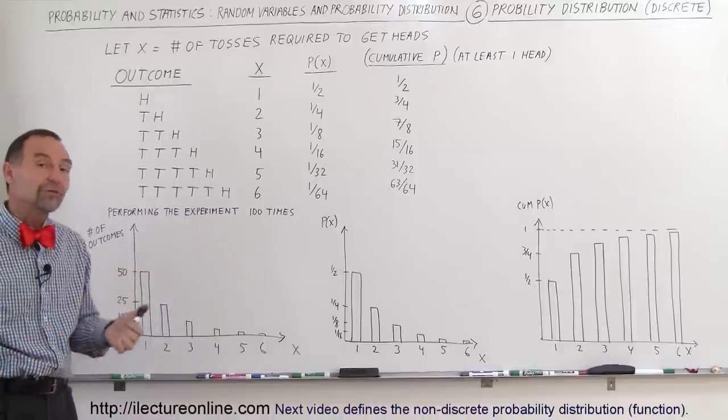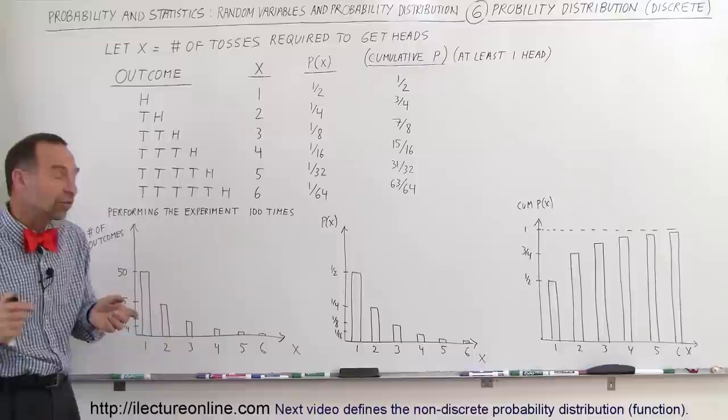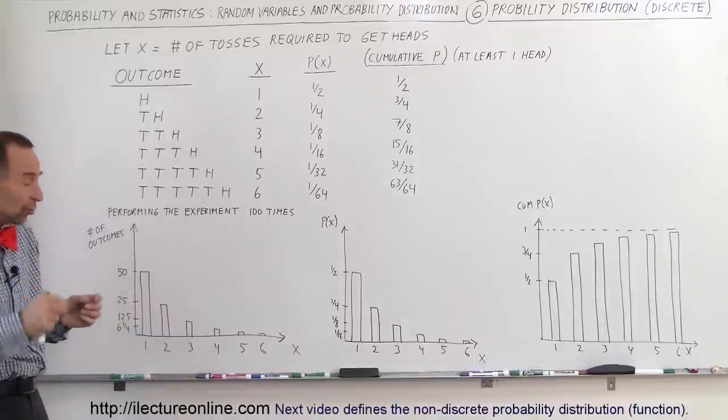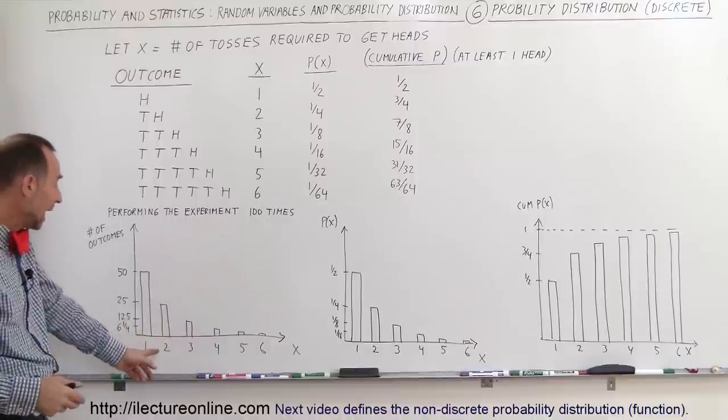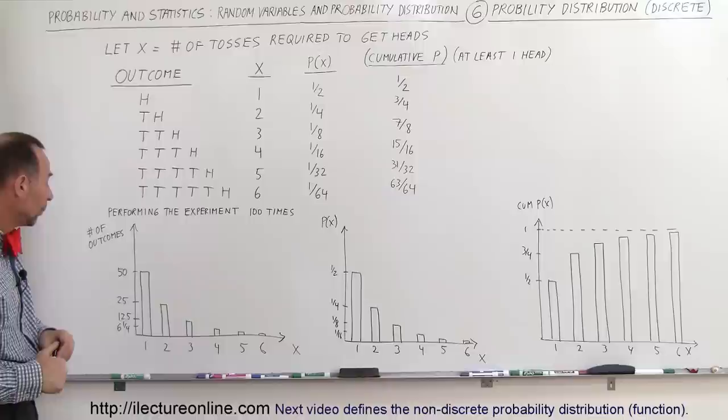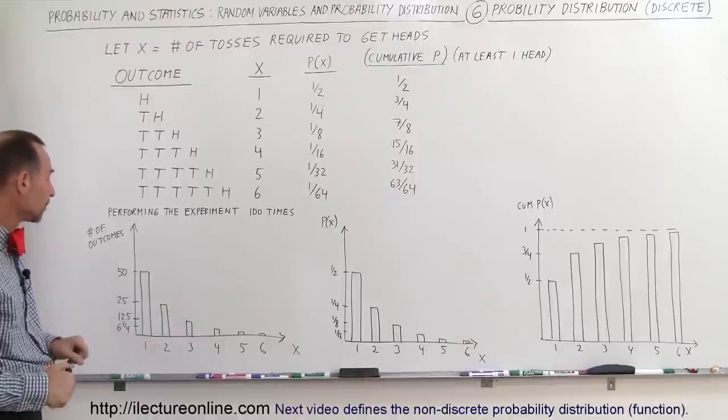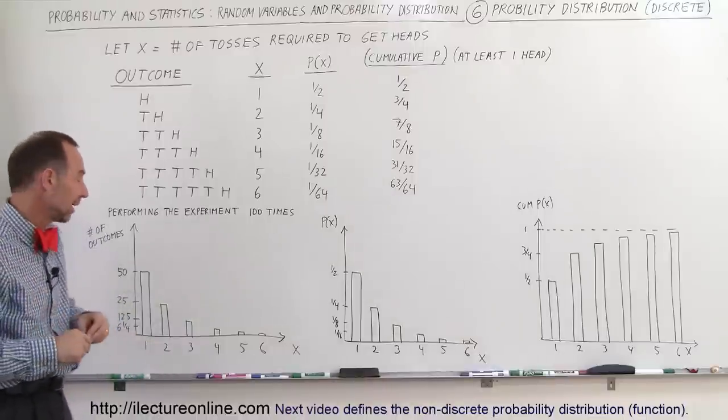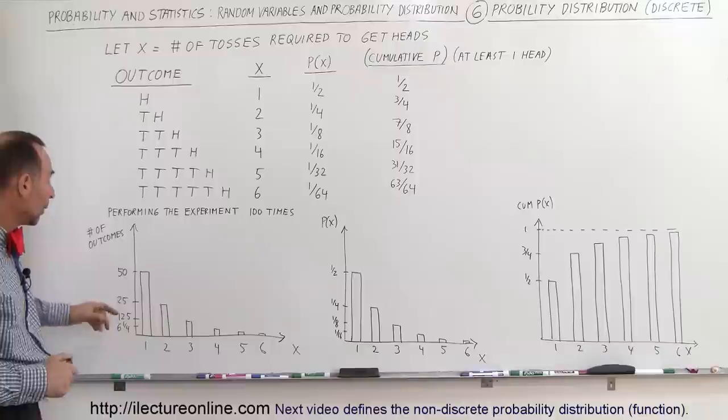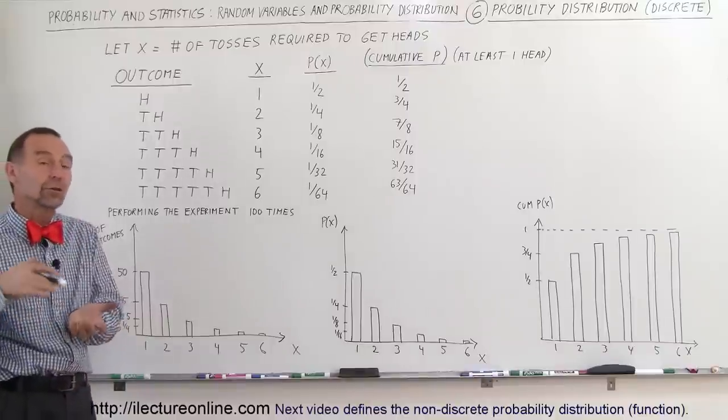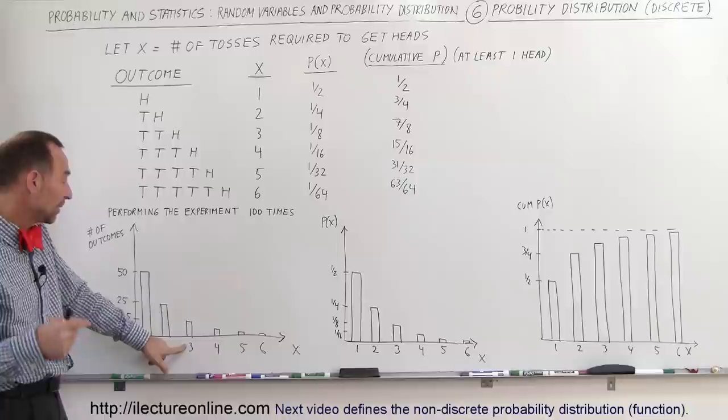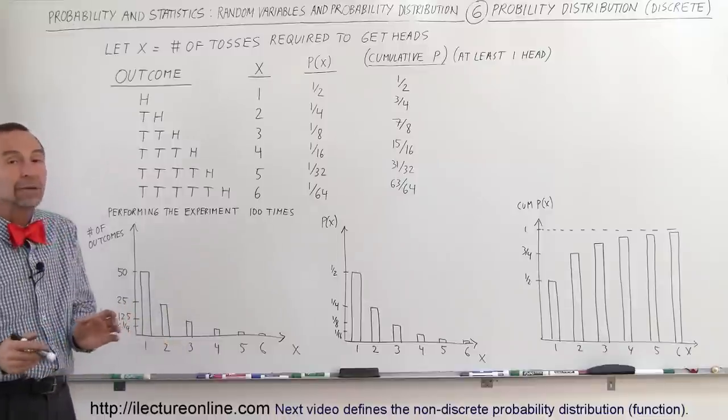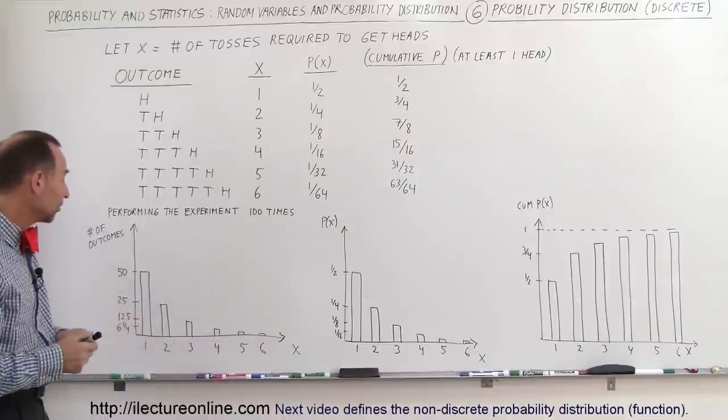If you do 100 experiments, the chances are that you'll get heads on the second try 25 out of 100 times, so you'd expect 25 events with x equal 2, because 2 means you get heads on the second try. What will be the number of times you'll get heads on the third try? That's 12 and a half out of 100, so x would be 3, and the probability there would be 12 and a half out of 100 times.